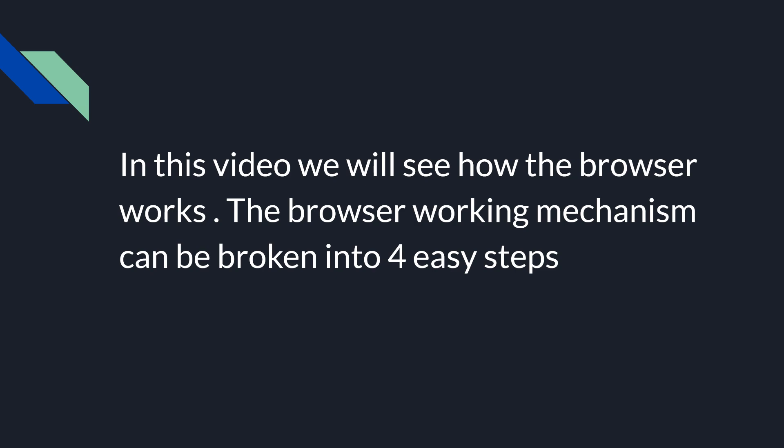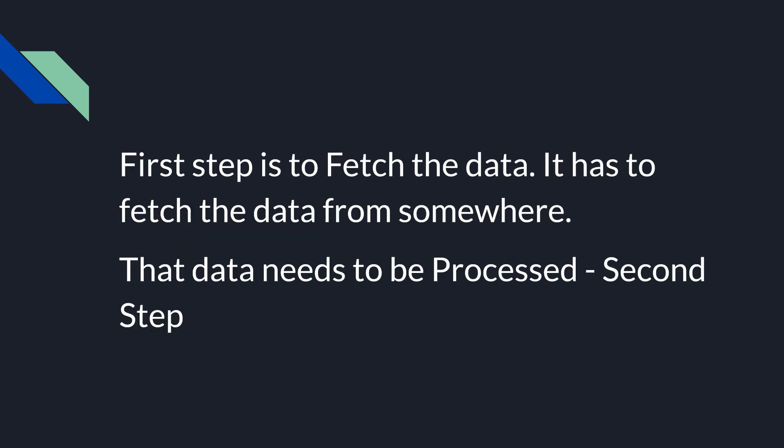The browser working mechanism can be broken into four easy steps. These are not standard steps — just according to me, in order for you to understand very easily. I have broken this into four easy steps. The first step is the fetching of the data. If you look in our network tab we will be able to see the resources — the browser is trying to get data from the network. The second step is that the data needs to be processed.